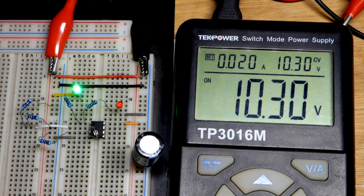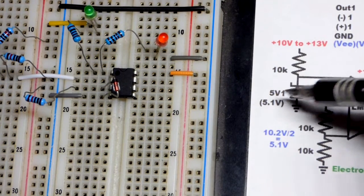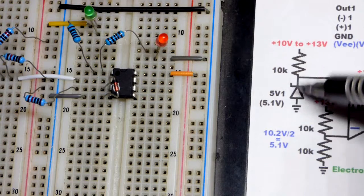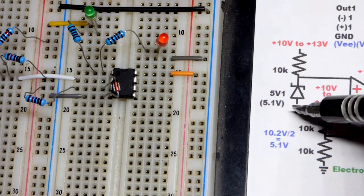So of course there's many ways to improve this but this is a simple circuit. Now an important voltage for this circuit is 5.1 volts. We're using a 5.1 volt zener diode to get that and when current flows through it while it's reversed it builds up that voltage.